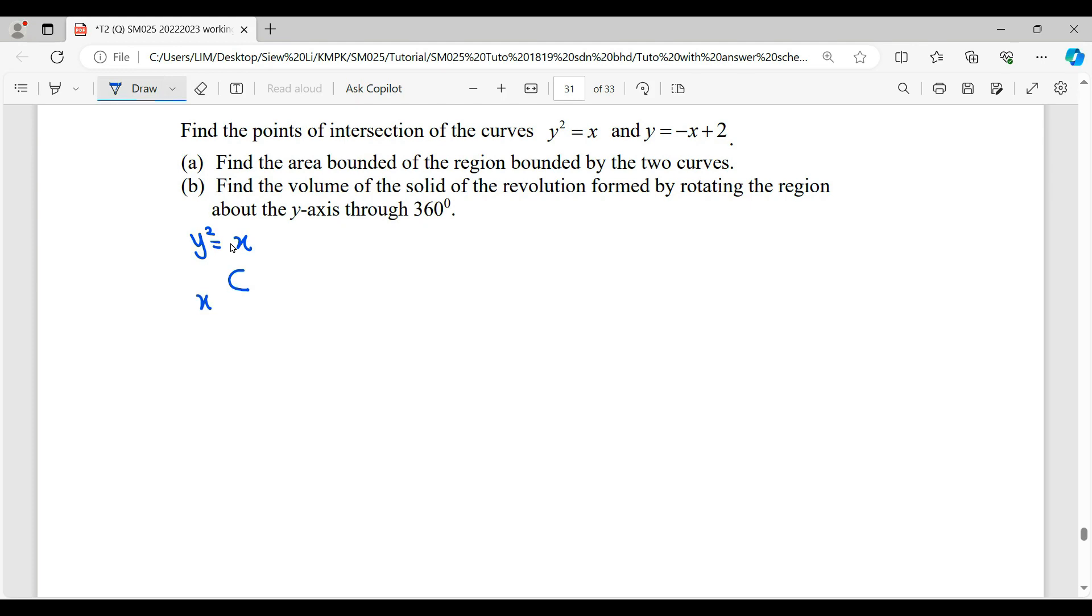So when x equals 0, y equals 0. We try to draw out this curve so that we can find the point of intersection. Label your y-axis and x-axis. So the vertices of this parabola happen at (0,0), open to the right.